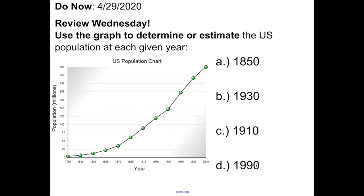What I want you to do: pause the video and estimate the population at 1850, 1930, 1910, and 1990. And then when you're ready, unpause and we'll see what I got.